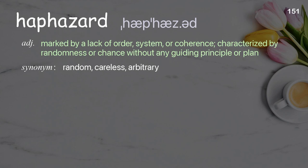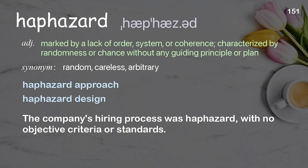Haphazard: marked by a lack of order, system, or coherence; characterized by randomness or chance, without any guiding principle or plan. Examples: haphazard approach, haphazard design. The company's hiring process was haphazard, with no objective criteria or standards.